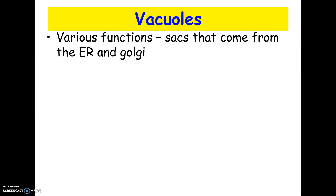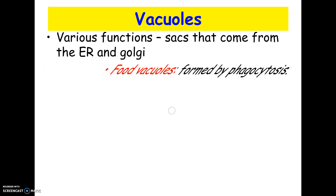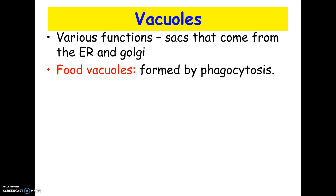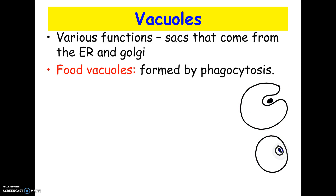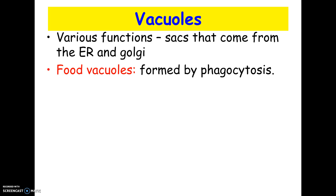Vacuoles look a lot like lysosomes — they're little sacs — and depending on the type of vacuole, they can have different functions. In animal cells, vacuoles might store things, or they might be food vacuoles, meaning when a cell eats something by phagocytosis. The cell eats something and it becomes a food vacuole inside a little membrane. That food vacuole might then go to the lysosomes for digestion.